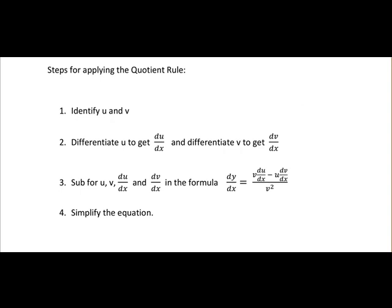Here are the steps involved. First you identify u and v. So u will be the top function, v will be the function at the bottom, or in the denominator. You differentiate u to get du/dx and differentiate v to get dv/dx. The reason for this is we'll be subbing du/dx and dv/dx into our formula.